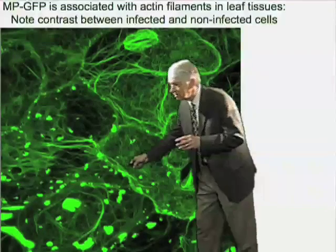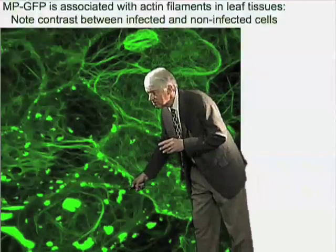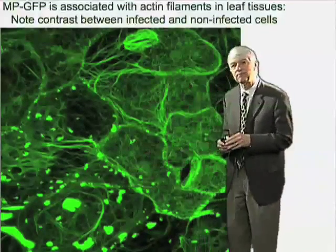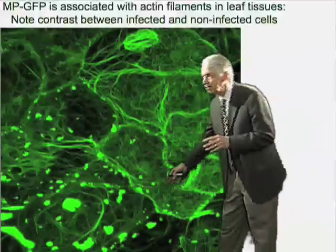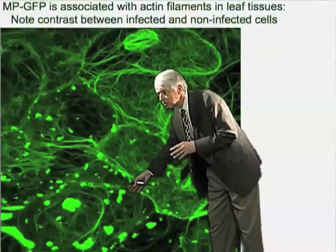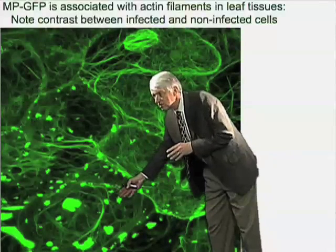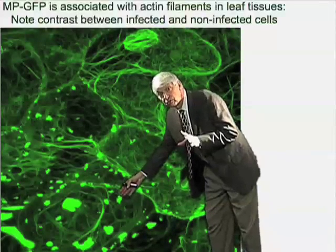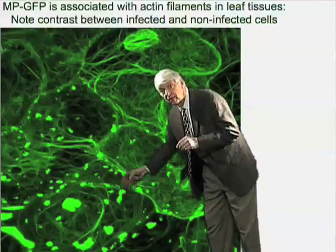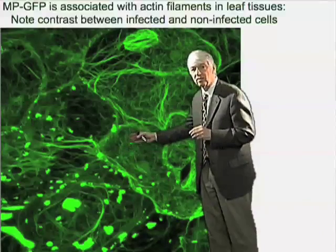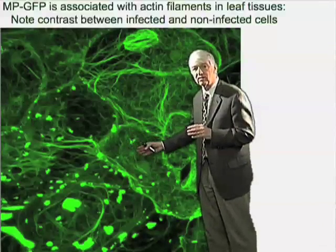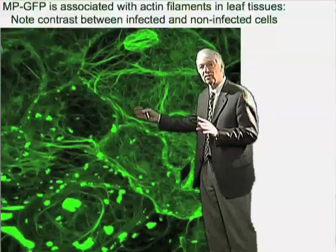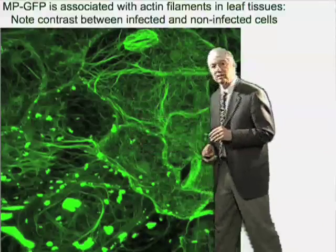There are still some plasmodesmata that are labeled with the movement protein and the replication complexes either in or adjacent to the cell wall. In other cases, you can see that these factories are still out in the cytoplasm — this would represent where most of the virus replication is happening early on, or where most of the movement protein is being made. This cell is a younger infection, and this cell is a non-infected cell.